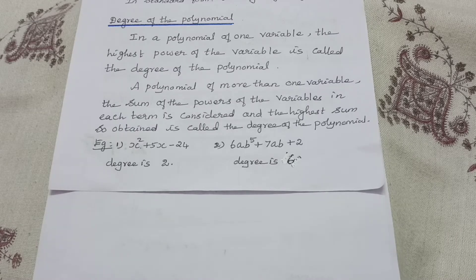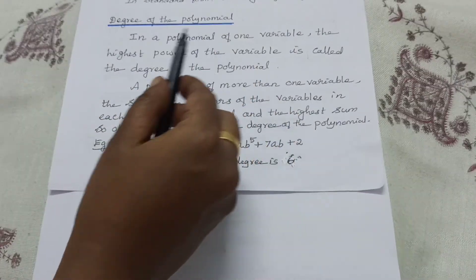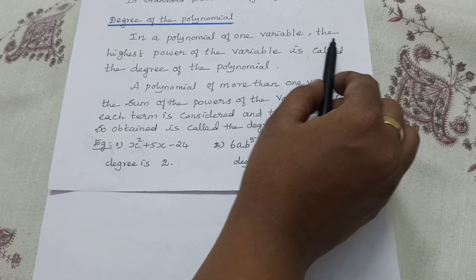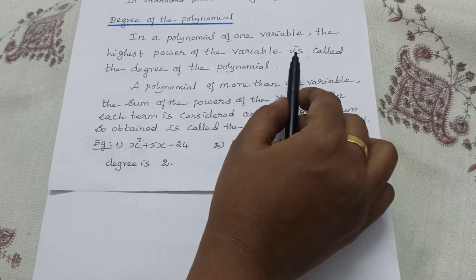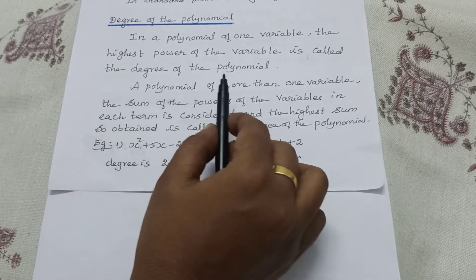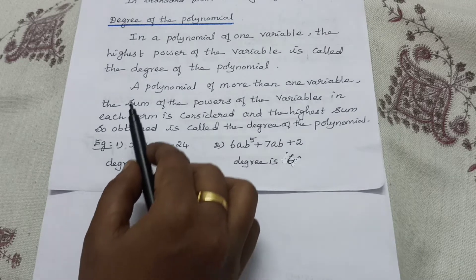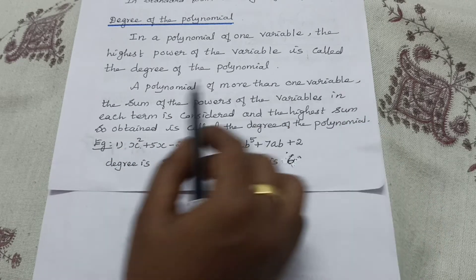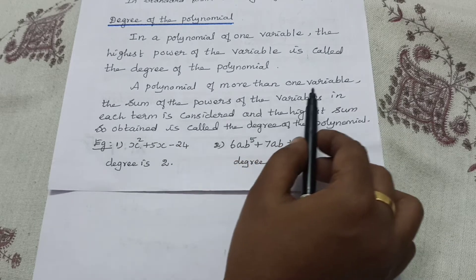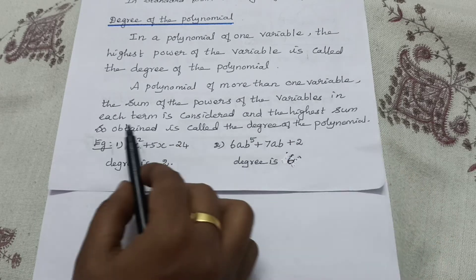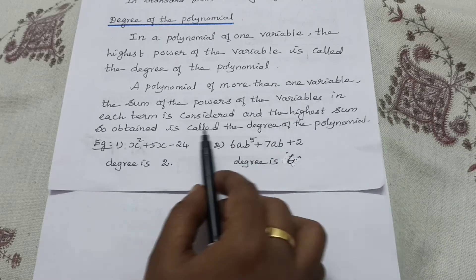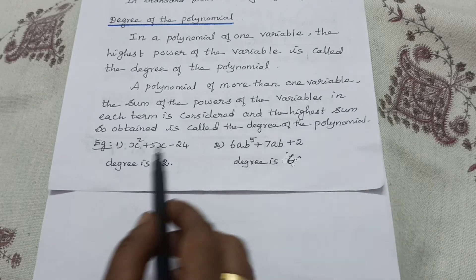Now let's see how to find the degree of the polynomial. In a polynomial of one variable, the highest power of the variable is called the degree of the polynomial. In a polynomial of more than one variable, the sum of the powers of the variables in each term is considered, and the highest sum is called the degree of the polynomial.